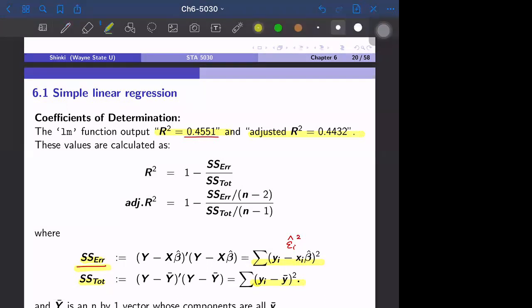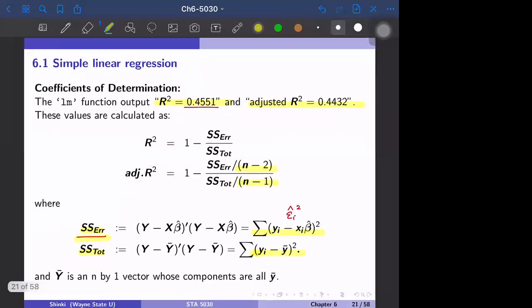And adjusted R-square, we have similar formula, but we have some adjustment term n-2 and n-1. So this is the definition and the meaning of R-square. And why is adjusted R-square defined when these definitions are so similar?